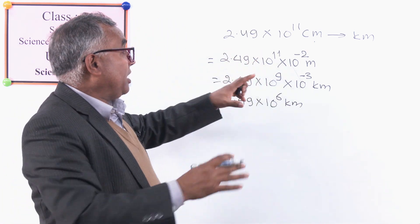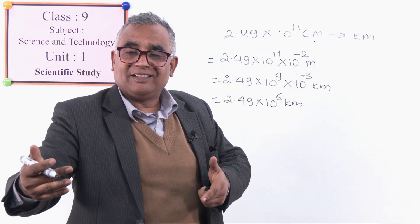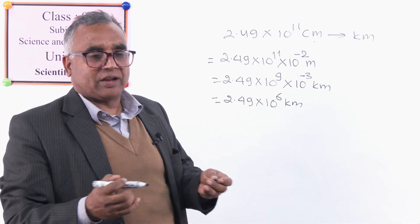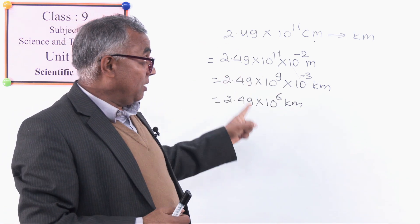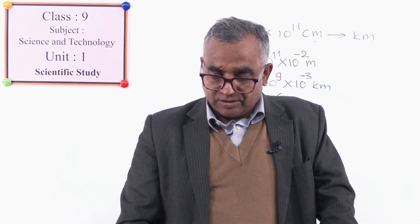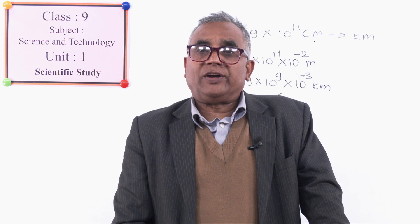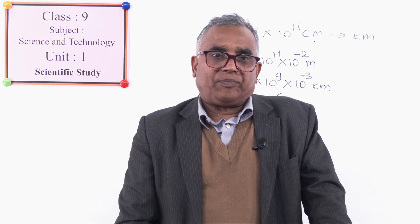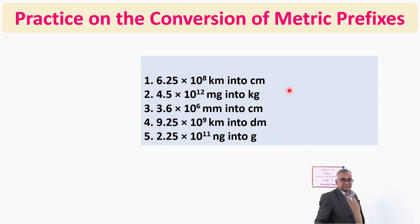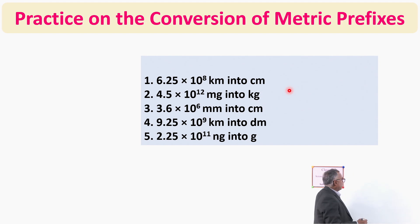If you use large numbers to multiply or convert, it takes long space, long time, and there is more chance of mistake. But with scientific notation, you can very easily convert one unit to another. You will become perfect if you practice again and again. Next time we will repeat, but try to get perfection with this approach.